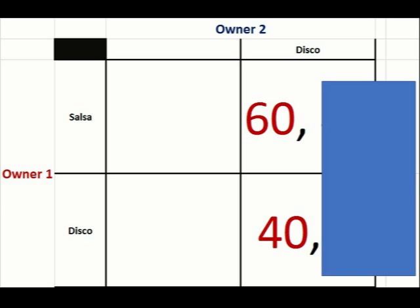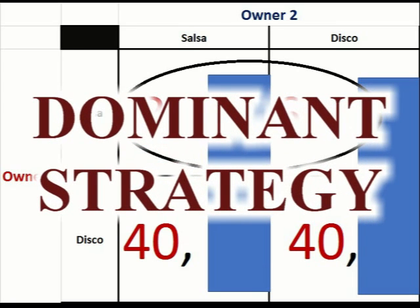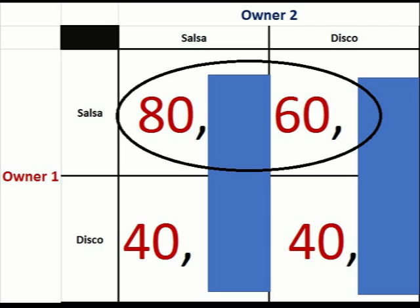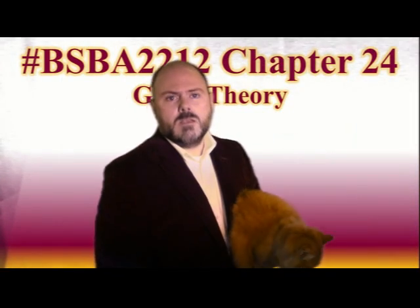Now what happens if owner two plays disco music? If owner two plays disco and we play salsa, we make sixty thousand dollars. If both of us play disco, we make forty thousand dollars. So if owner two plays disco, we definitely want to choose salsa. What we have then is a dominant strategy — no matter what owner two does, we are better off playing salsa. Eighty is greater than forty, sixty is greater than forty. We're definitely playing salsa no matter what.